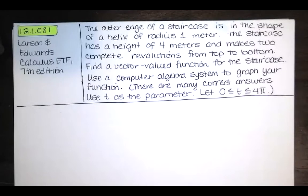This video is about problem 12.1.081 from the Larson and Edwards Calculus Early Transcendental Functions 7th edition. We're told that the outer edge of a staircase is in the shape of a helix of radius 1 meter. The staircase has a height of 4 meters and makes two complete revolutions from top to bottom.